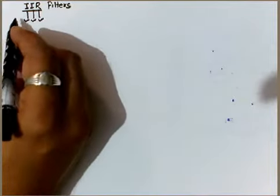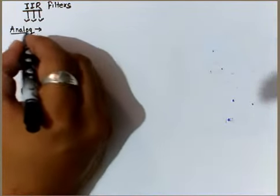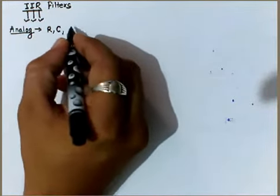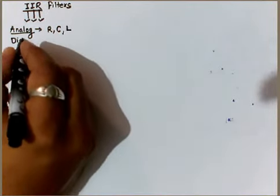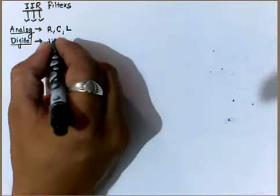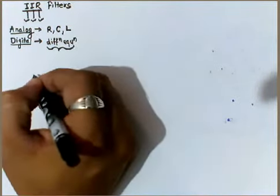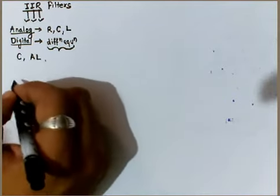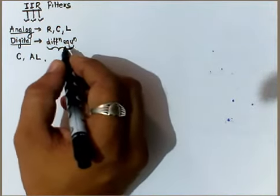The analog filter is called an analog one because it is designed based on components like resistors, capacitors, and inductors. The next filter type is the digital filter. When we say it is a digital filter, it deals with the difference equation, which can be implemented with the help of programming languages like C or even assembly level language.